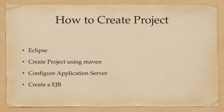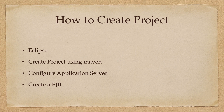We are going to use Eclipse and create a project using Maven, so we don't have to manage jars manually. Then we will configure the application server and create an EJB. We'll start with the application server first because it needs to be provided when creating an EJB project. We'll create a server, create a project, map the server to the project, and then we can directly deploy the EJB application from Eclipse to the WebLogic server. In the next video we'll talk about how to configure an application server, which is WebLogic.